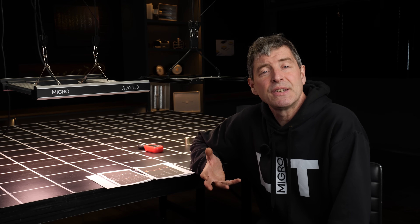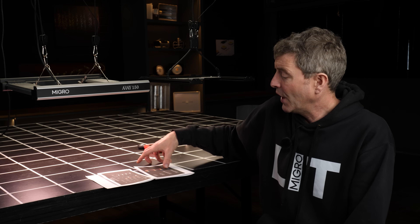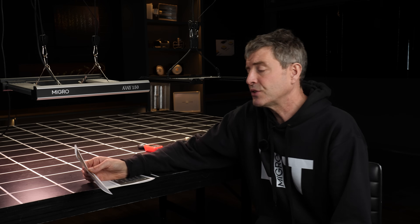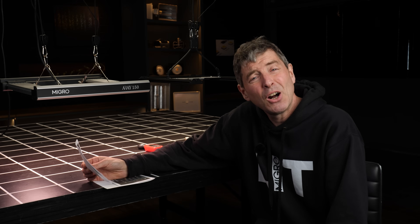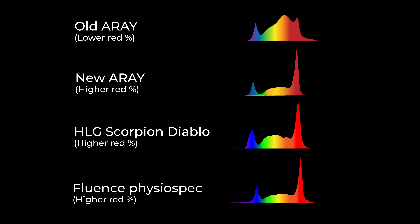To give you an idea of how and why changes occurred over the last few years, I've got a little chart here displaying the old array spectrum that this was calibrated against — very similar to a lot of other spectrum of the day — compared to up-to-date spectrum. You can see three examples here: it's not just the array; you can see the HLG Scorpion Diablo and the Fluence Physio spec. All the high efficiency LED grow lights have that higher peak of red, or proportion of red.